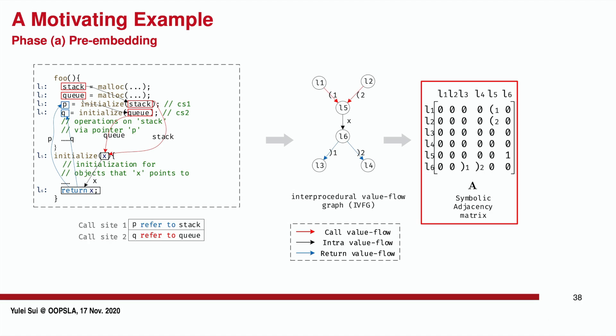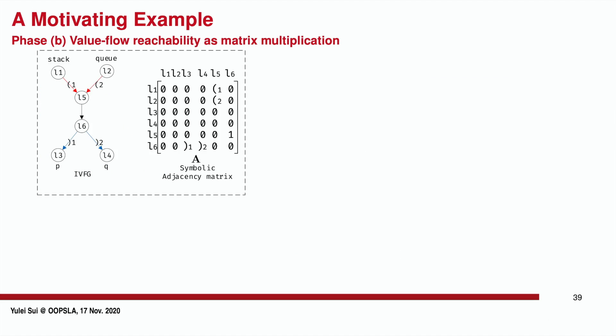The IVFG is then transformed to a symbolic adjacency matrix A, with 0 and 1 denoting intraprocedural non-reachable and reachable relations between two nodes. The interprocedural calls and returns are represented using parentheses symbols. In the matrix A, we formulate the value flow reachability between any two nodes using matrix multiplication. The H-th power of matrix A defined in this formula is used to represent the H-order reachability.